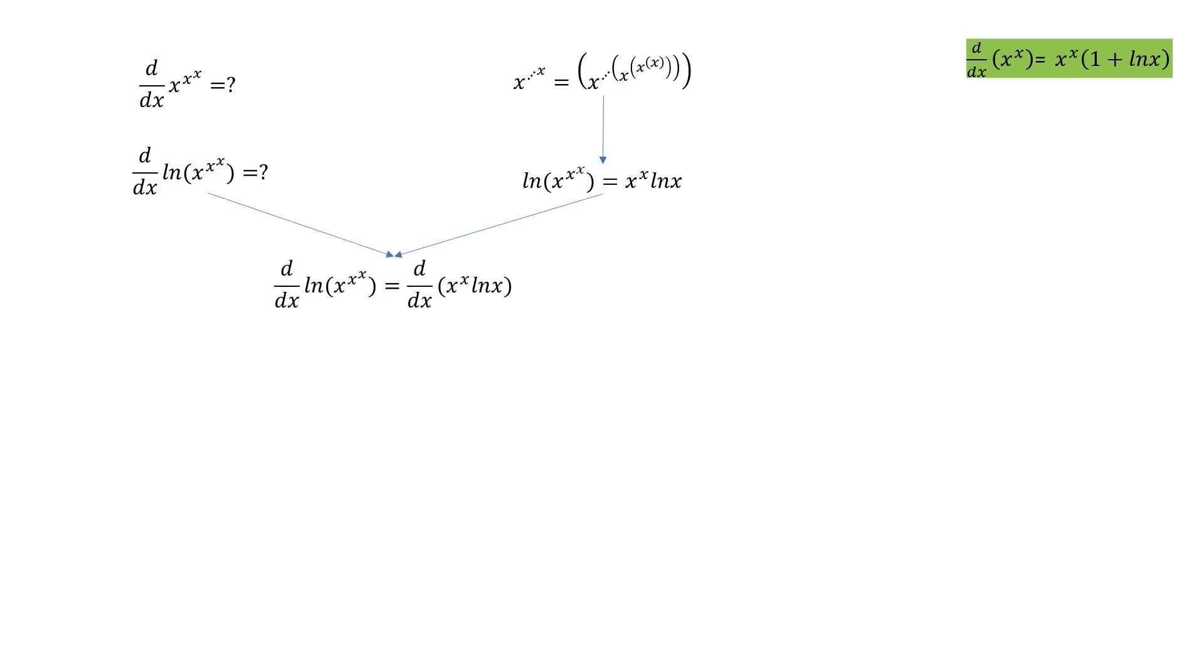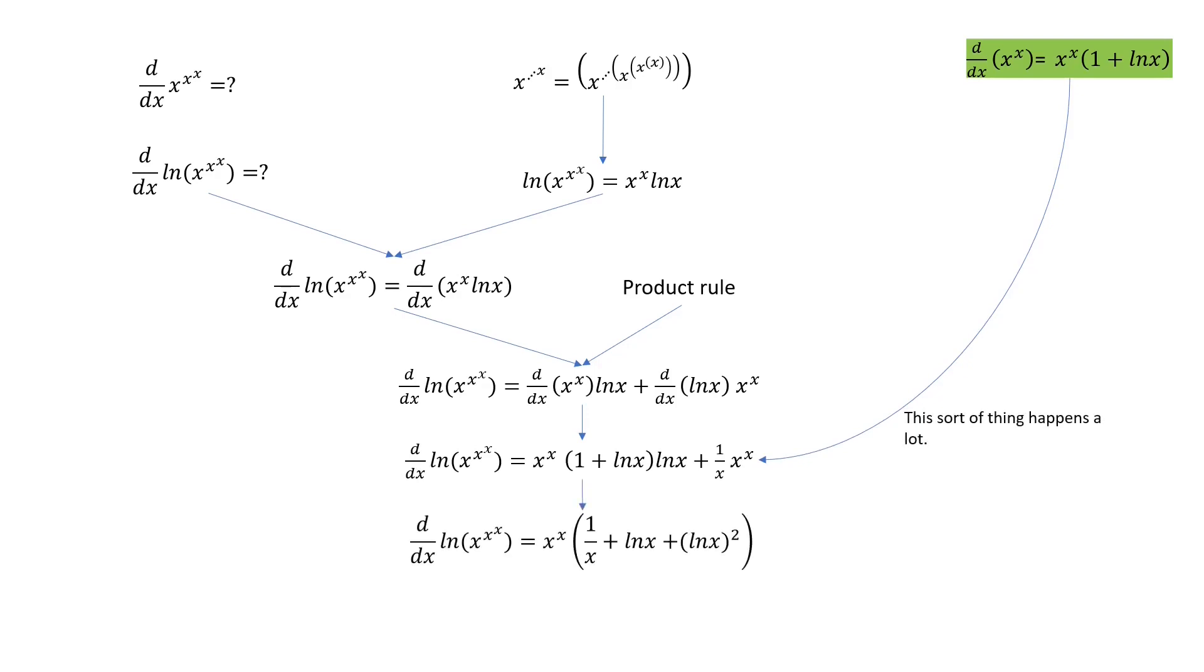Again, history repeats. It's a derivative of the product of functions. And we use the product rule. And then we get this expression. But what is the derivative of x to the x? Well, we just found it, right? It's in the green box. So plugging in. And the derivative of ln x is 1 over x. Now we commute out the common factor.